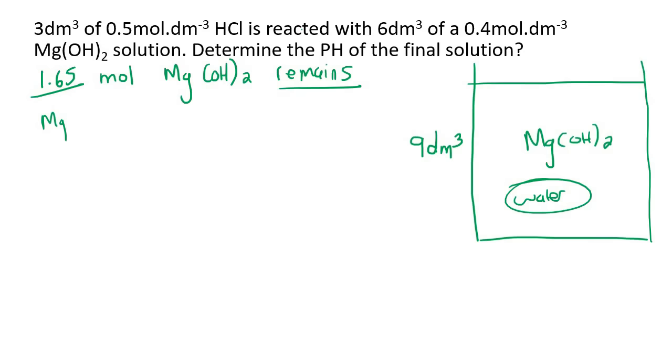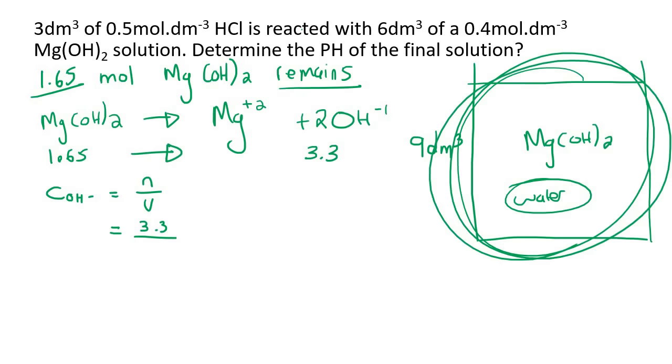Now you know what a MgOH2 will do in water. It will dissociate because it's a base. So it will break up into Mg. Now the valency of Mg is plus 2. And the valency of OH is negative 1. So to balance this, you would have to put a 2 over there. Now we know the moles of MgOH2 is 1.65. So that could give us the moles of OH minus as 3.3, because it's a 1 to 2 ratio.